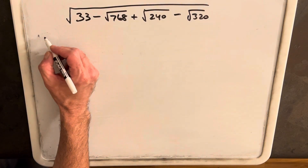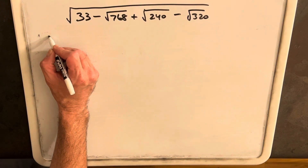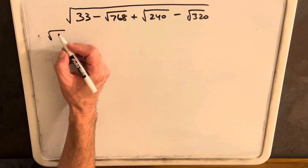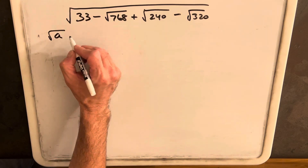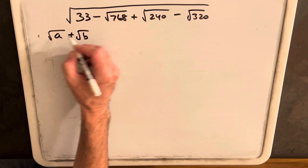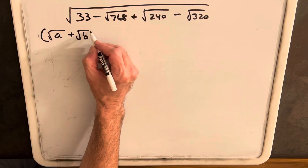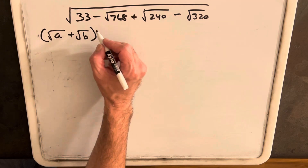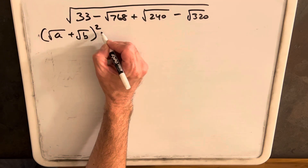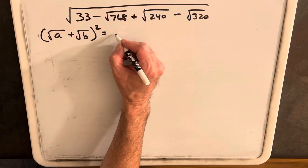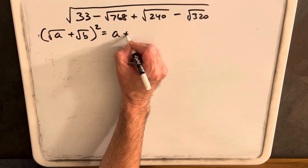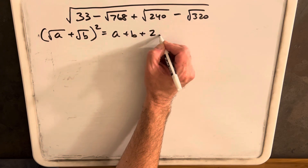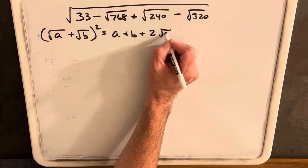We're going to look at a couple of useful tools here. Let's start by looking at what happens when we square the square root of A plus B. This is just going to be A plus B plus 2 times the square root of AB.